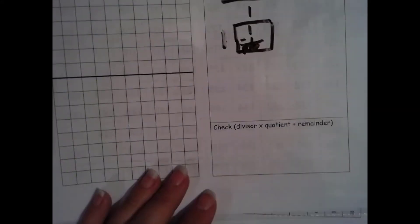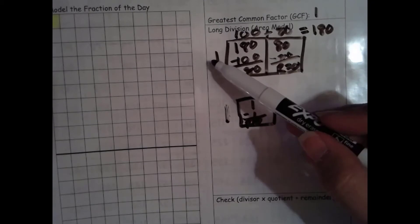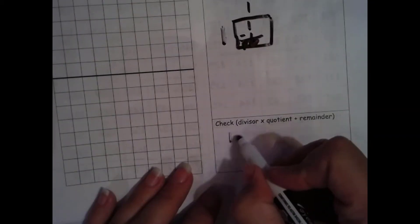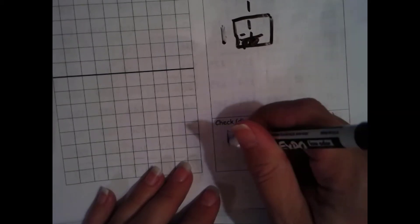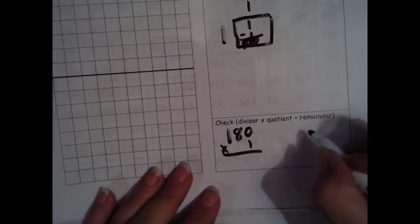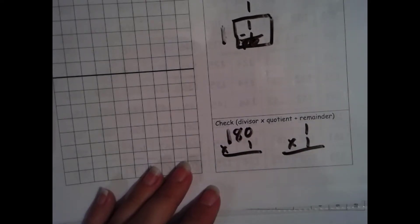So we still check the same way though. It's our divisor times our quotient plus our remainder. Since our remainder is 0 and the identity property of addition says when you add 0 it stays the same, we don't need to worry about that. But we are going to check our answer.